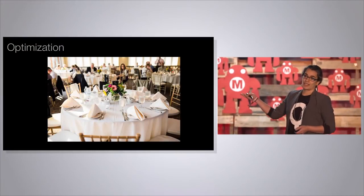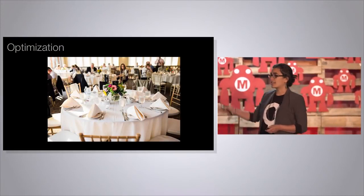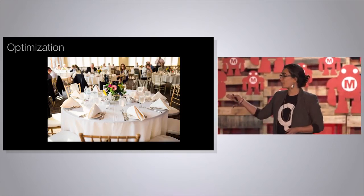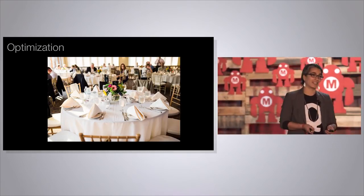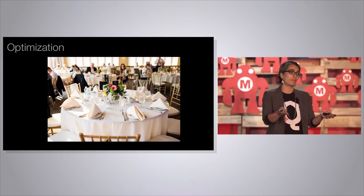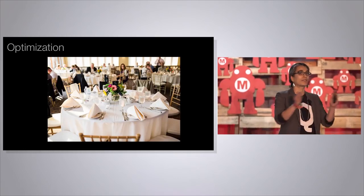The first example is optimization — finding the best solution to a problem among many possible solutions. Here's a picture of a table at my wedding. You can see ten people around a table. If you have ten people over for dinner, how many different ways are there to configure ten people around a table? The answer is ten factorial. The number ten seems so small, but ten factorial is 3.6 million. There are 3.6 million ways to arrange ten people for dinner.